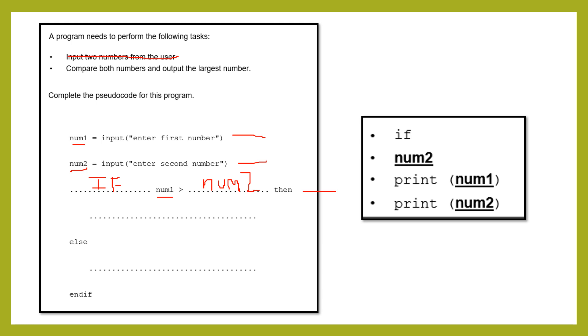Right. Now, this is my first criteria here, so if number one is greater than number two, well I've got to output the bigger, so I'd basically print, it's hard to write on a mouse, so sorry, I'd print num1, because that's the biggest number.